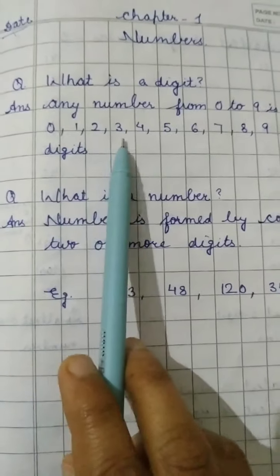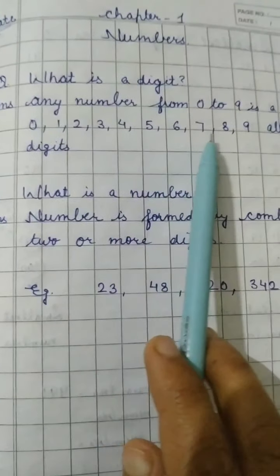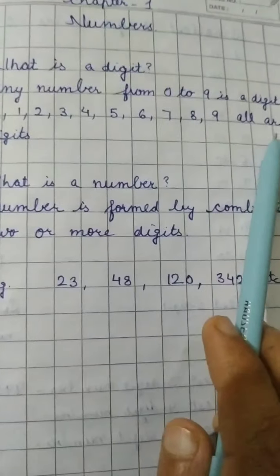0, 1, 2, 3, 4, 5, 6, 7, 8, 9 all are digits.